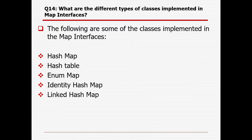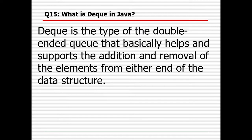What are the different types of classes implementing the map interface? HashMap, HashTable, EnumMap, IdentityHashMap, and LinkedHashMap are the classes implementing the map interface in the Java collection framework.